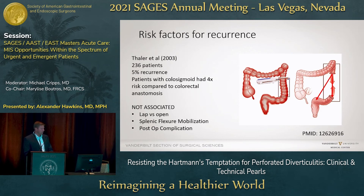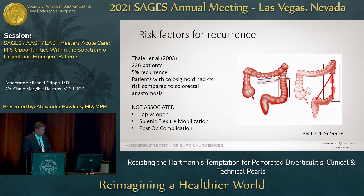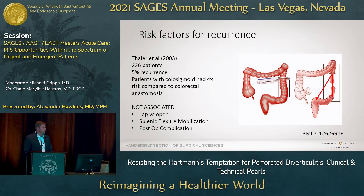When you do your primary anastomosis, make sure you get all the way down onto the rectum. If you're splaying the taenia, losing the epiploic fat, there are no diverticula, and you're right above the most proximal fold of Houston — that's your level. A colorectal anastomosis has four times lower risk of diverticulitis recurrence compared to a colo-sigmoid anastomosis, so always get all the way down on the rectum.